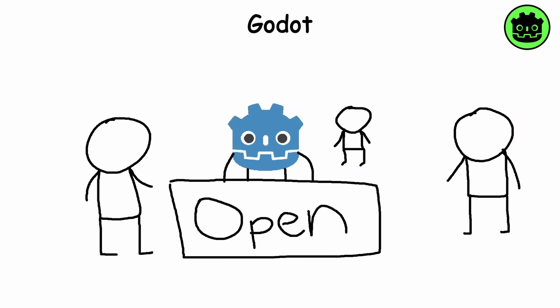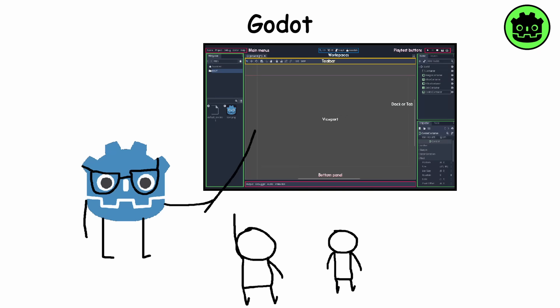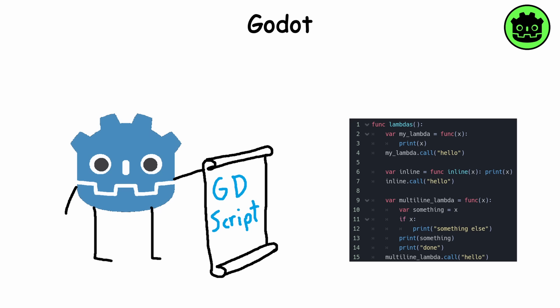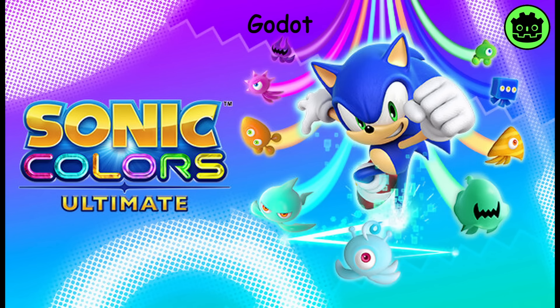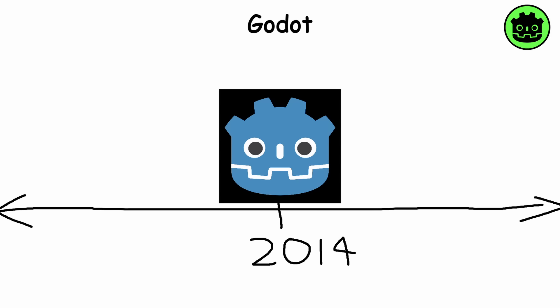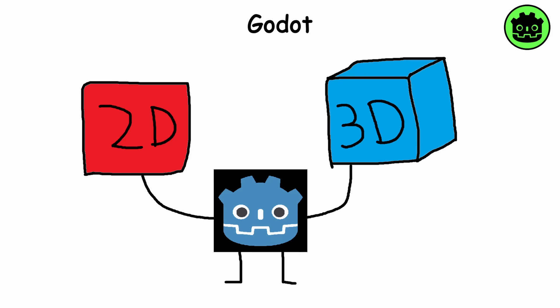Godot is an open-source game engine commonly praised for its user-friendly interface. Godot uses its own scripting language called GDScript, which is similar to Python. It's popular among indie devs and smaller studios due to being free and open-source. Notable games created in Godot include Getting Over It and Sonic Colors. The engine was first released in 2014 and supports both 2D and 3D game development.